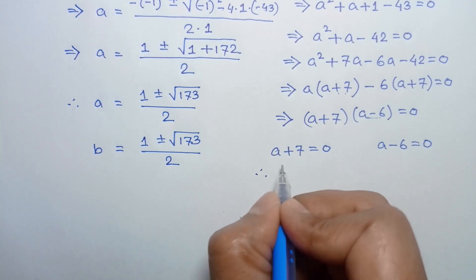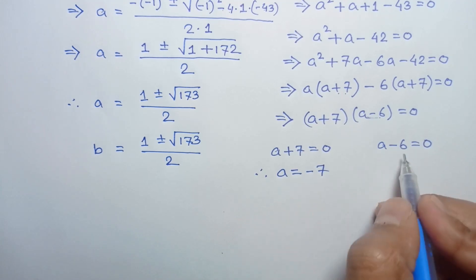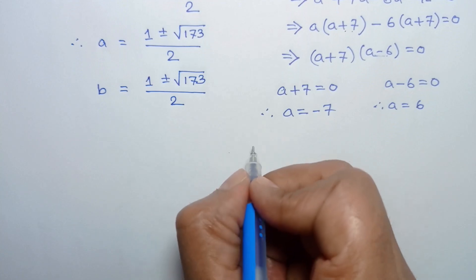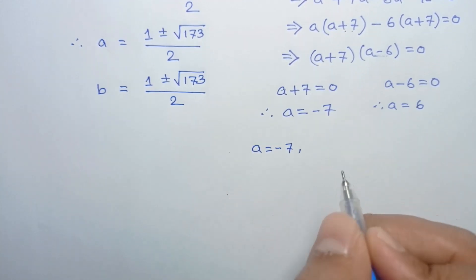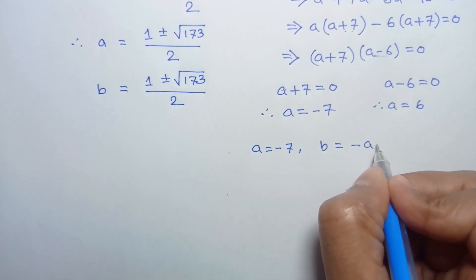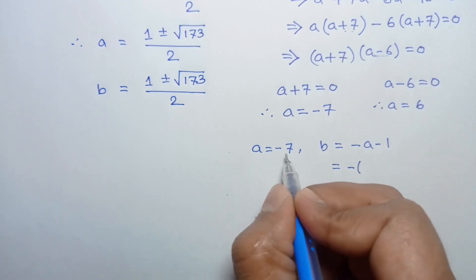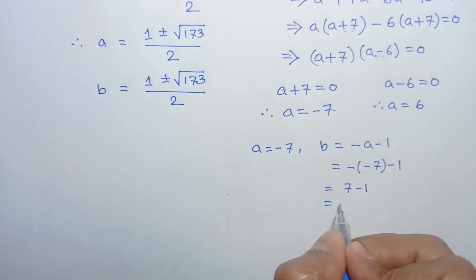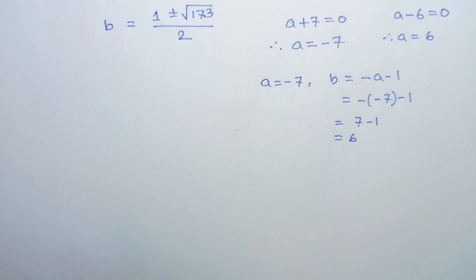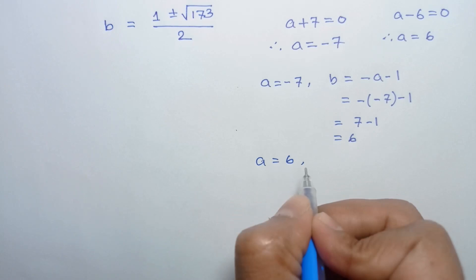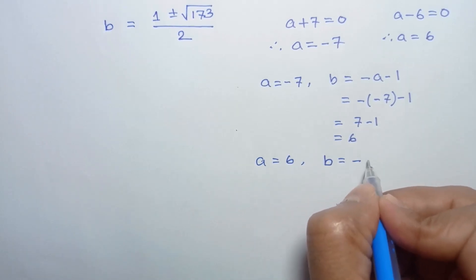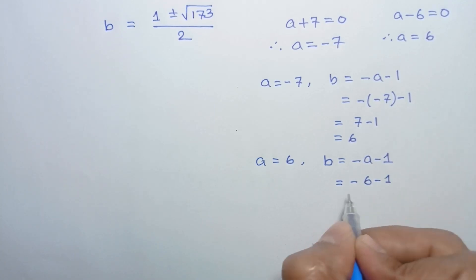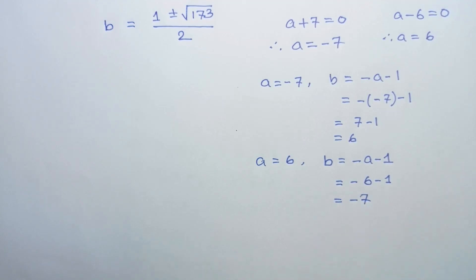So a plus 7 equals 0 gives a equals negative 7, and a minus 6 equals 0 gives a equals 6. When a equals negative 7, from equation 4, b equals negative of negative 7 minus 1 equals 7 minus 1 equals 6. When a equals 6, from equation 4, b equals negative 6 minus 1 equals negative 7.